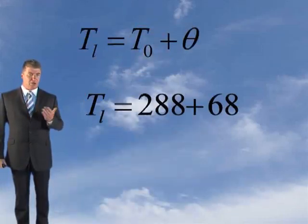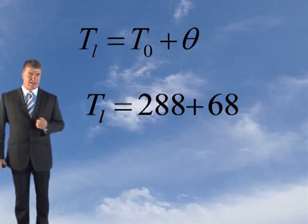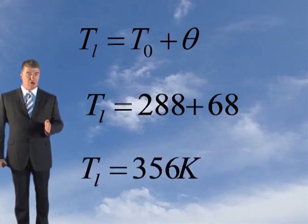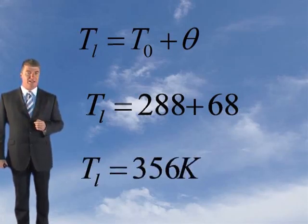Putting in the known variables: TL equals 288 plus 68, which gives an absolute average temperature of the smoke of 356 degrees Kelvin.